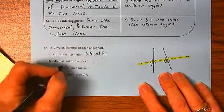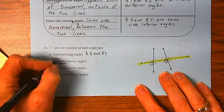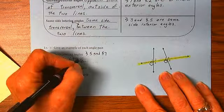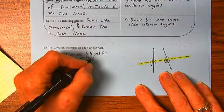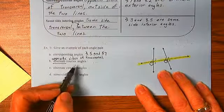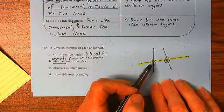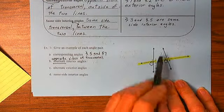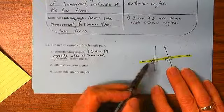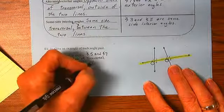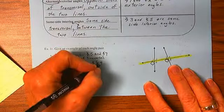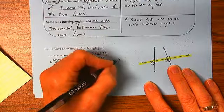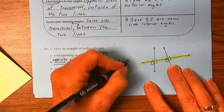Alternate interior angles. Alternate means opposite sides of the transversal. And we want interior. So the interior angles are going to be between the other two lines. Alternate opposite sides, interior between the two. So angles 6 and 3, or angles 2 and 7.